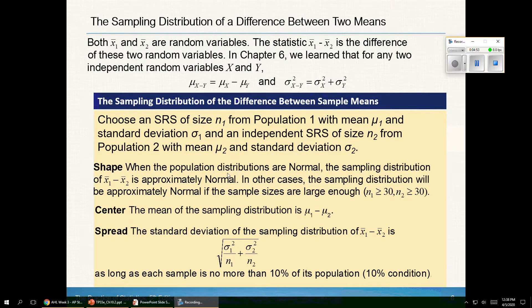The shape, when the populations are approximately normal, the sampling distribution will be approximately normal. If I don't start with normal distributions, this works if I have big sample sizes. The center of the distribution is going to be the difference in my two means. And the standard deviation of the sampling distribution is going to be found with this formula, combining the variances, provided that each sample is no more than 10% of the population.